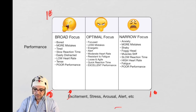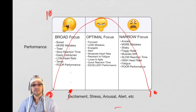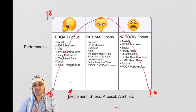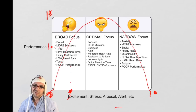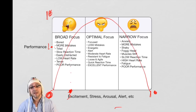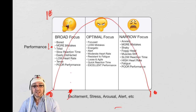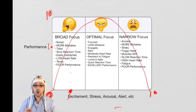Generally, performance follows an inverted U curve. Let's say we're at an arousal level of three — zero is sitting in a chair sleeping, ten is overstimulated. At an arousal of three, following the curve up to where it intersects, we get maybe a six in performance. Broad focus is that person who is bored and understimulated: more mistakes are made, they're tired, slow reaction time, easily distracted, low heart rate, tense, and performance is poor.